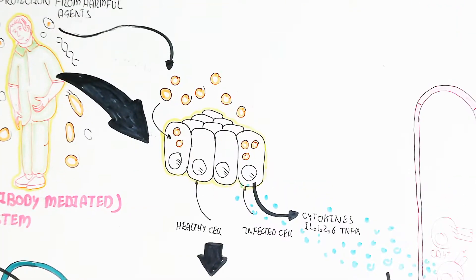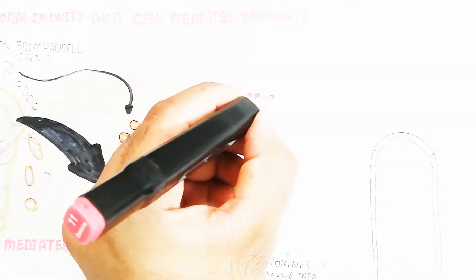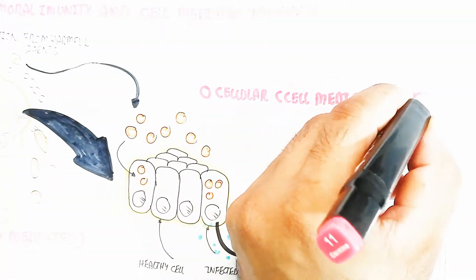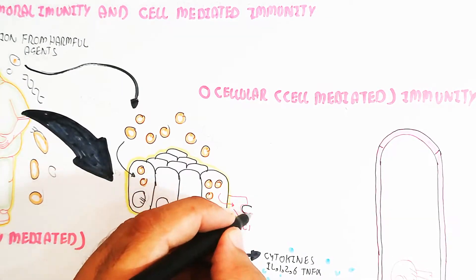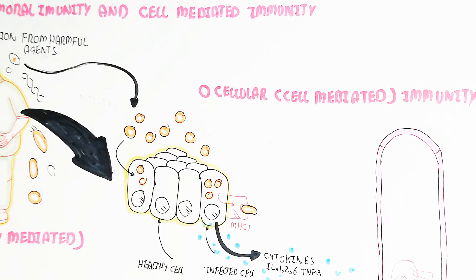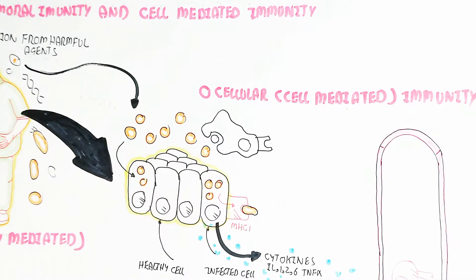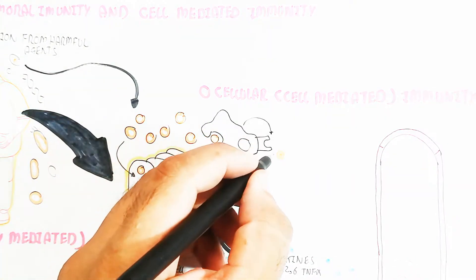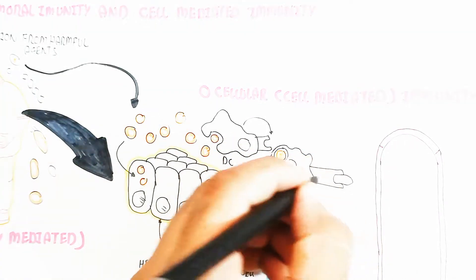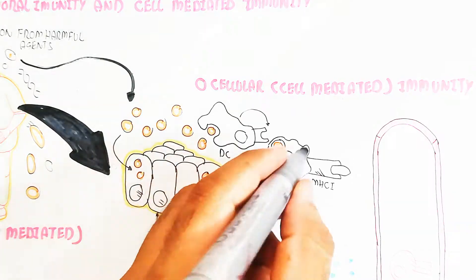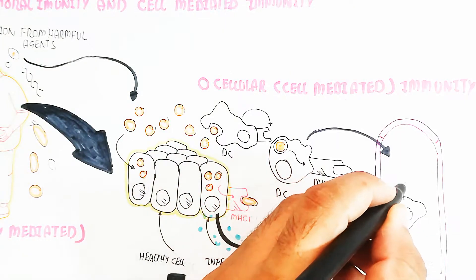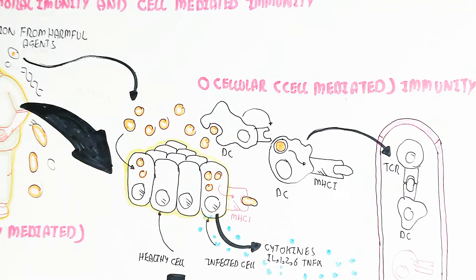In cell-mediated immunity, the dendritic cell uptakes the antigen extracellularly, and the MHC class I molecule is recognized through the T cell receptor. This activates T cells — the dendritic cell enters the blood circulatory system and lymphatic system, where it presents antigen via MHC class I molecule, and the T cell receptor triggers proliferation of CD8 and CD4 T cells.